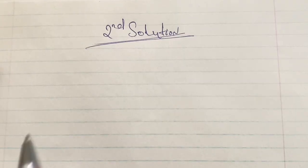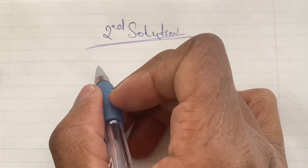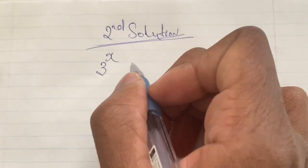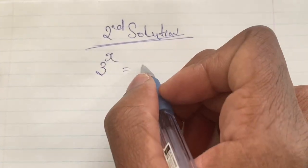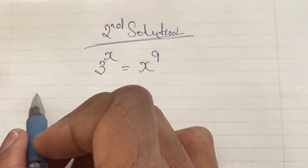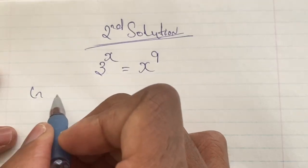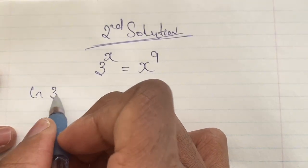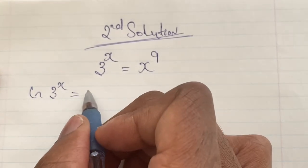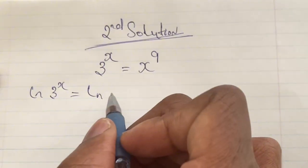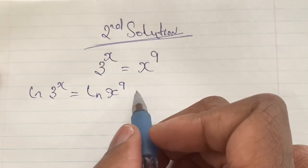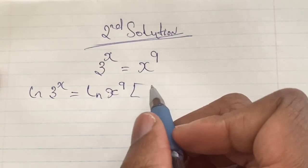Now let us look at another solution for x. Again we have 3 to the power of x is equal to x to the power of 9. Previously we saw that x is equal to 27. Now we're going to look at the second solution using logarithm. We start by taking the natural log of both sides: ln of 3 to the power of x is equal to ln of x to the power of 9.